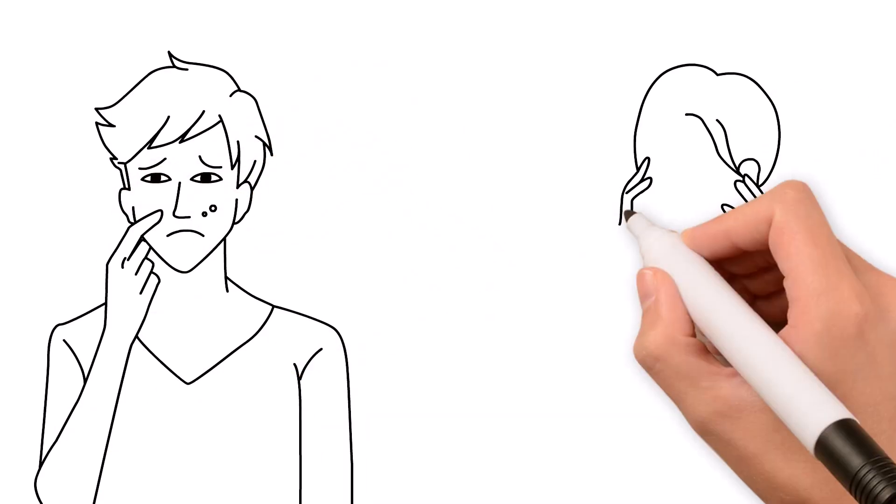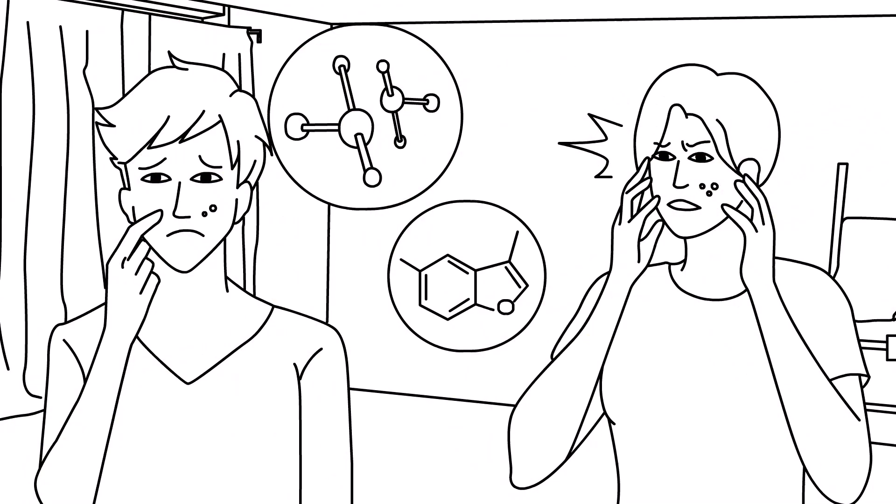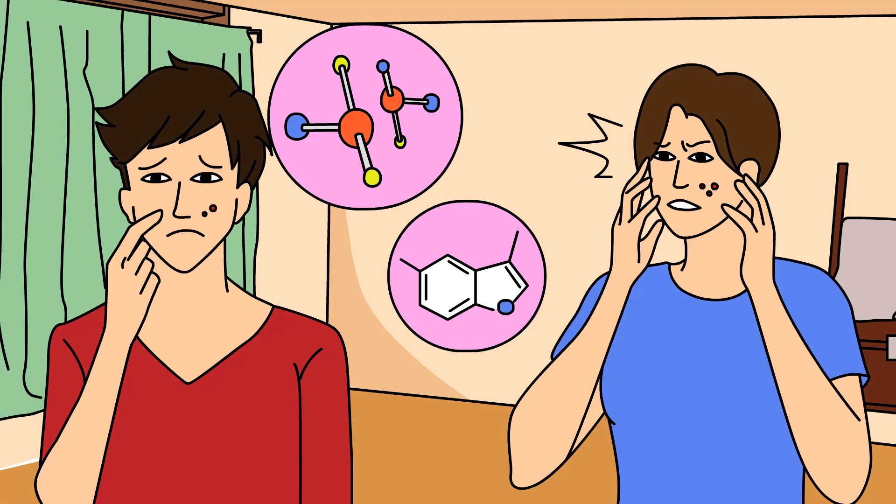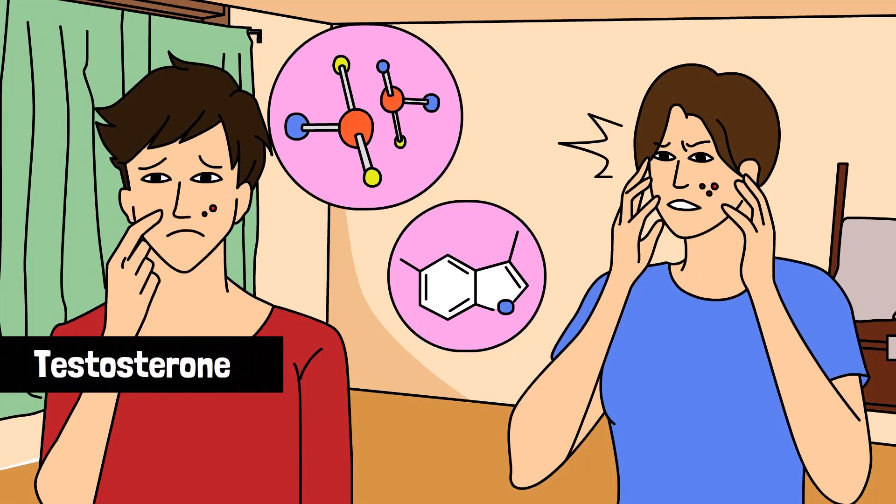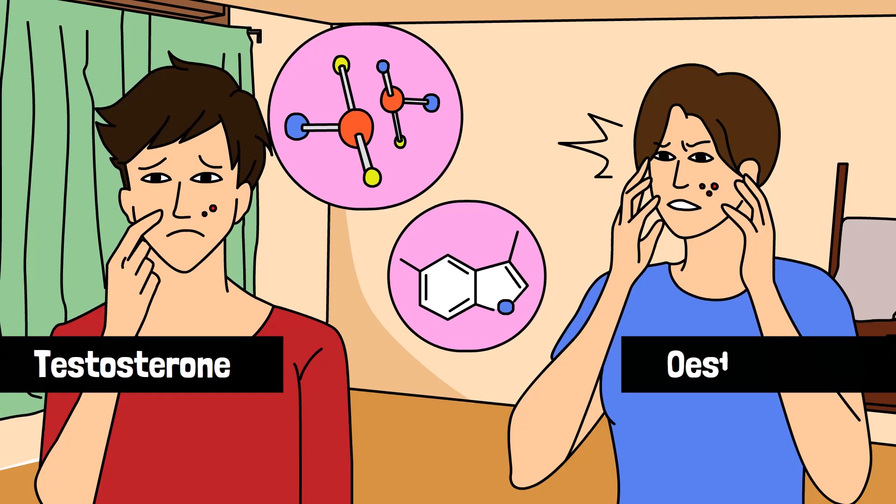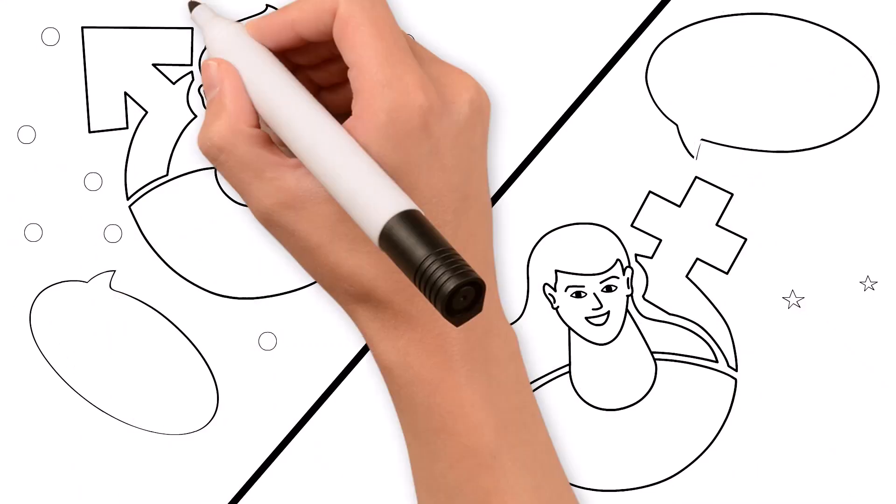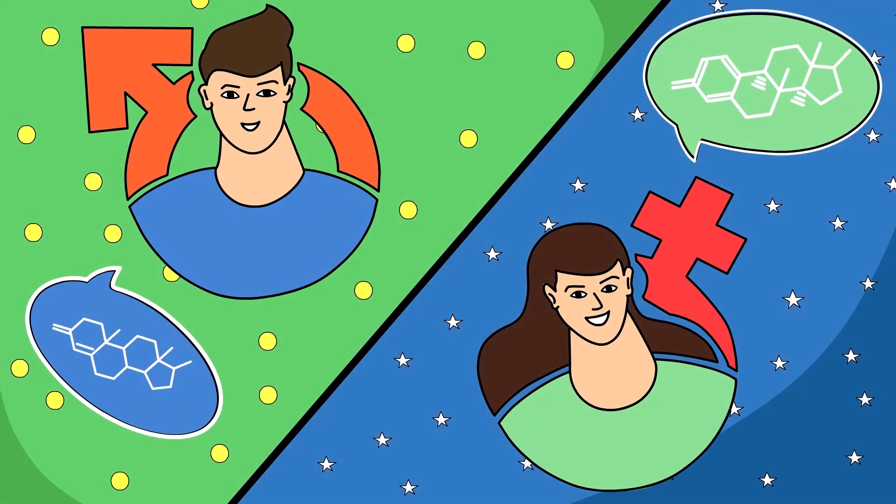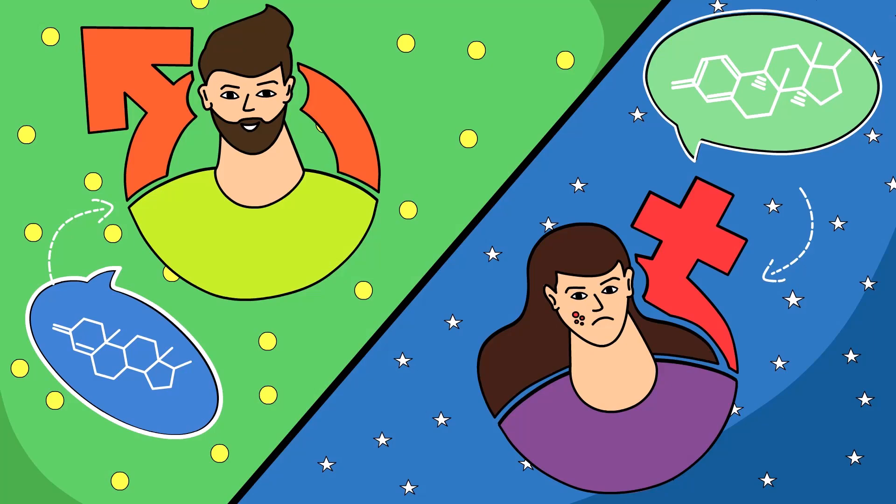Inside your body there are these things called hormones. For guys, the hormone is called testosterone, and for girls, the hormone is called estrogen. During puberty, these hormones start to get really active. They're the ones responsible for all the changes you experience during puberty.